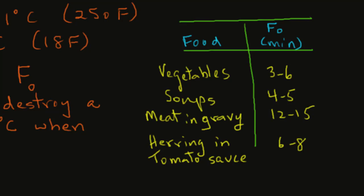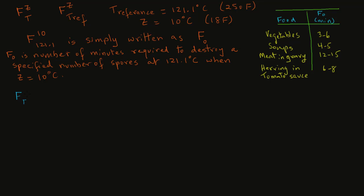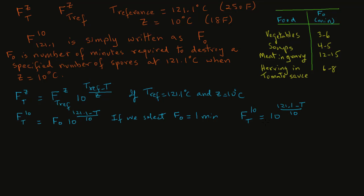In a previous tutorial, you will recall that we can determine F0 value at any temperature if the z value is known. We obtained this expression: F_T^z equals F_T reference^z times 10 raised to power T reference minus T over z. Now if the reference temperature is 121.1 degrees C and z equals 10 degrees C, then we can replace F_T reference^z with F0 in this expression. So if we select the value for F0 as one minute, then we can write F_T for a z value of 10 equals 10 raised to power 121.1 minus T divided by 10.